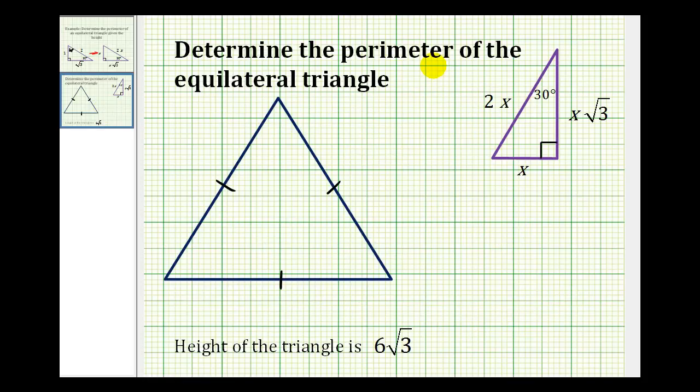So let's take a look at our example. We want to determine the perimeter of this equilateral triangle given that the height is six square root three. So we label the height as six square root three.